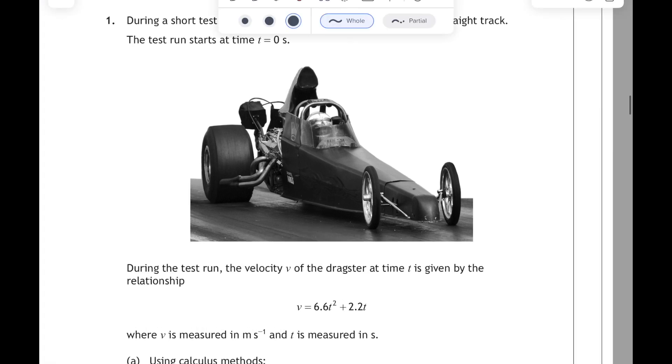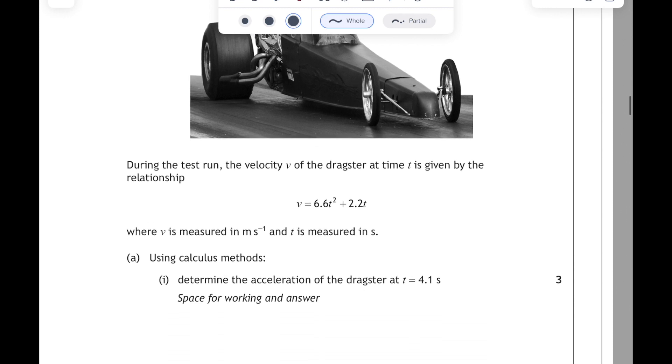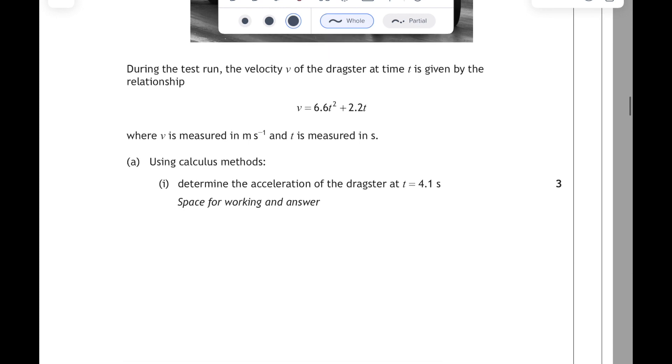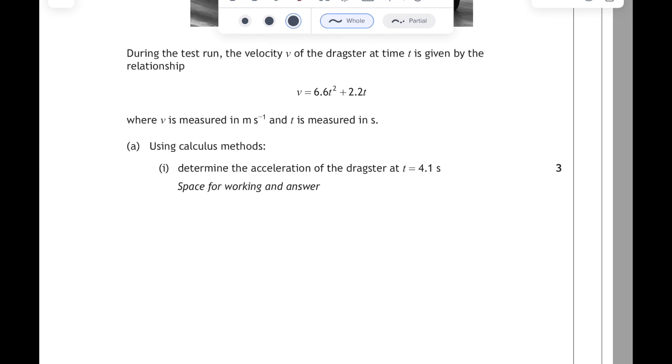So during a short test run, a dragster accelerates along a straight track, and the test starts at t equals zero. During the test run, the velocity of the dragster is given by this relationship: v equals 6.6t squared plus 2.2t.